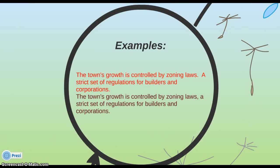Here's another example: 'The town's growth is controlled by zoning laws. A strict set of regulations for builders and corporations.' The appositive phrase is a fragment. Very simple revision — change the period after 'laws' to a comma: 'The town's growth is controlled by zoning laws, a strict set of regulations for builders and corporations.' Now we have a complete sentence.